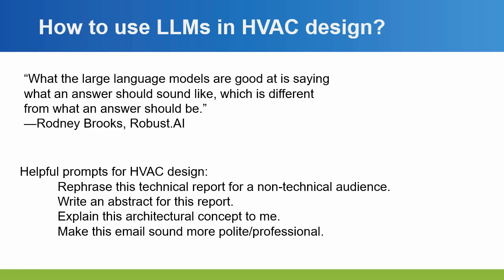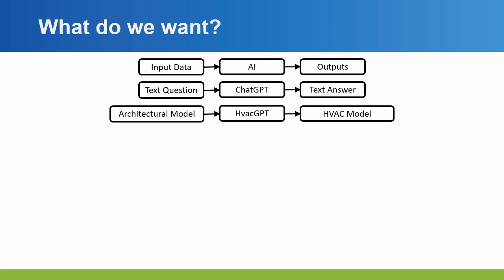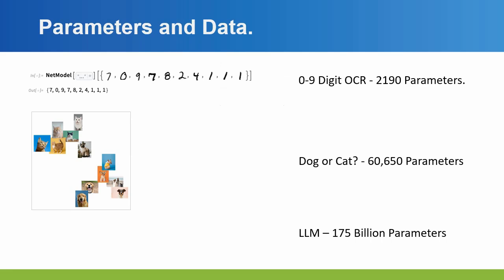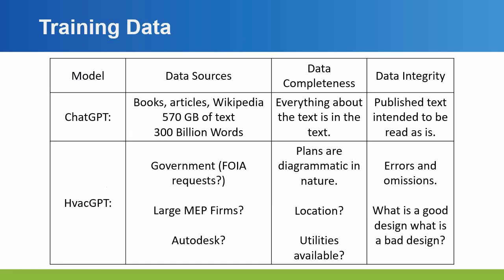But none of this really helps you in design — none of this is designing a building. So what do we actually want? AI takes input data and gives an output. ChatGPT takes a text question and gives a text answer. We want what I'll call hypothetically HVAC GPT, which takes an architectural model and outputs an HVAC model. How would we build this? Let's talk about parameters and data. Zero-to-nine digit optical character recognition takes about 2,000 parameters. Dog or cat takes 60,000 parameters. A large language model takes 175 billion parameters. How many parameters would HVAC design take? Who knows? How much data would it take? We don't know.